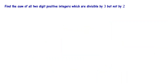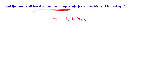Find the sum of all 2-digit positive integers which are divisible by 3 but not by 2. The 2-digit positive integers are 10, 11, 12, 13, 14, 15, 16, 17, 18, 19, and so on up to 99. These are all the 2-digit positive integers.